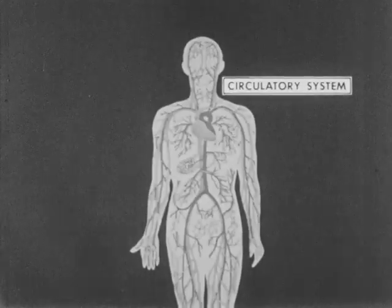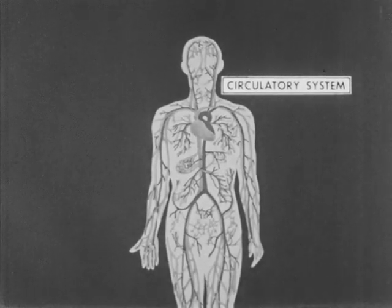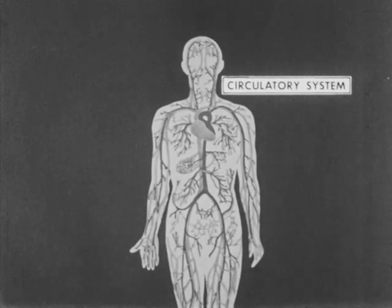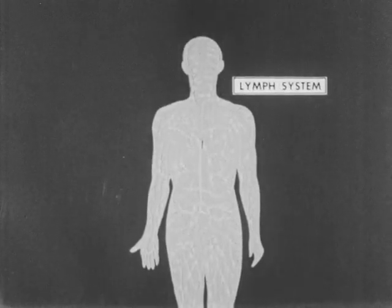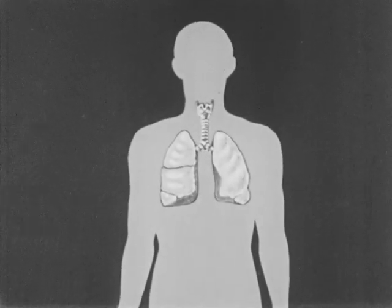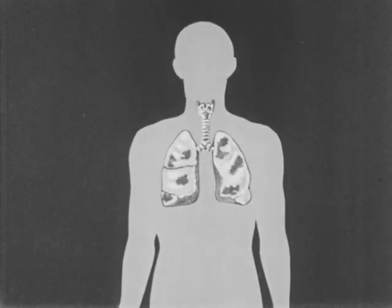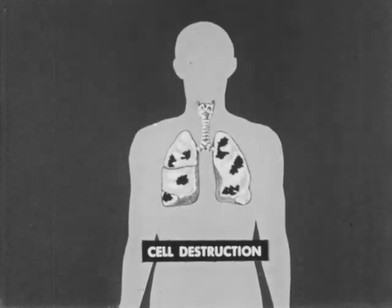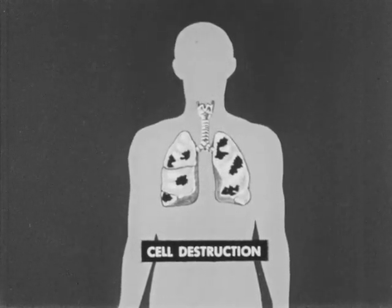Some invade the circulatory system and produce toxins that poison the body. Some cause disease by invading the lymph system. Almost all pathogenic microorganisms are parasites and live in healthy tissue and organs, thus destroying them. Cell destruction is the ultimate effect of all pathogenic microorganisms.